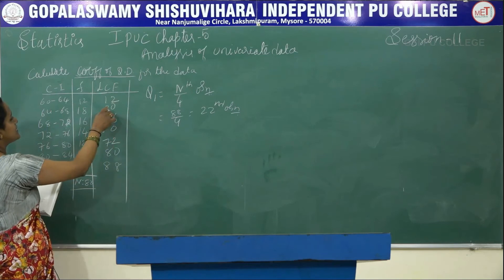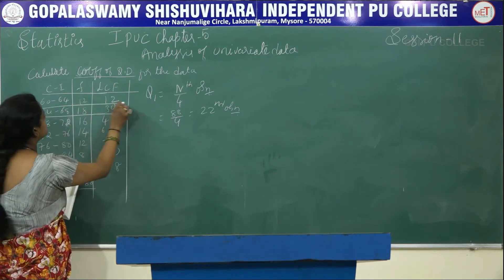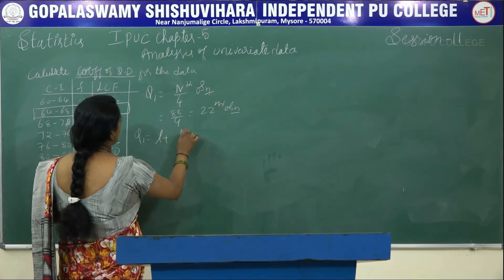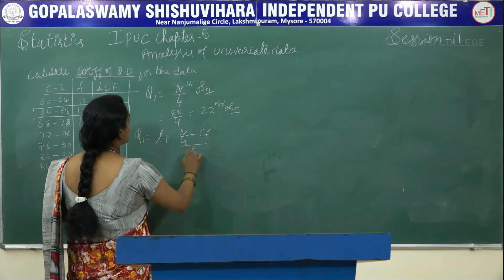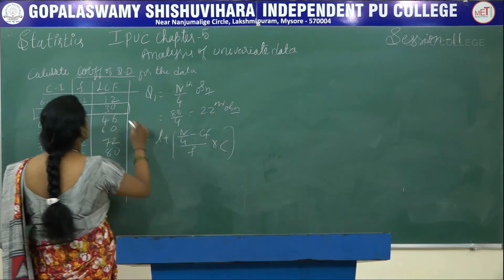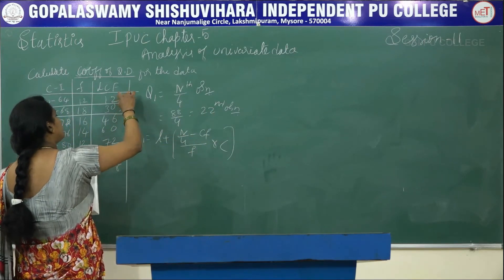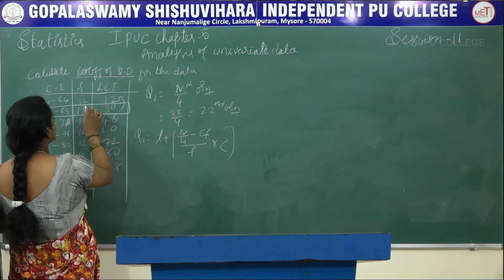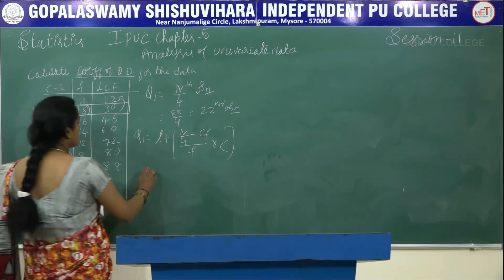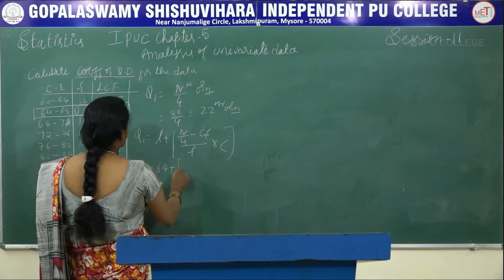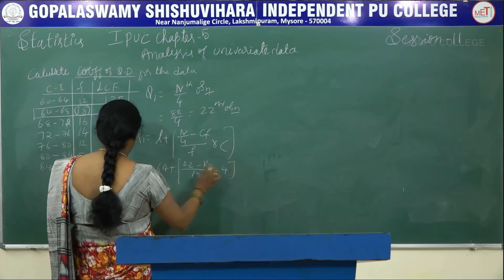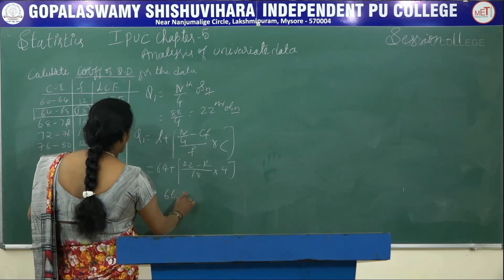The 22nd observation falls in LCF value 30. So Q1 uses the formula: L plus N by 4 minus CF divided by F into C. N by 4 is 22, CF is the previous cumulative frequency which is 12, frequency F is 18, and C is the class width of 4. So: Q1 is 64 plus 22 minus 12 divided by 18 into 4, giving Q1 equal to 66.22.